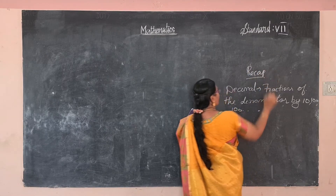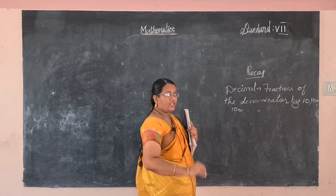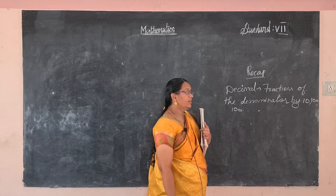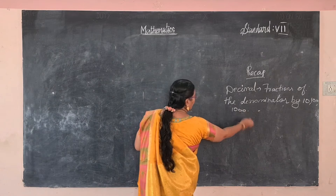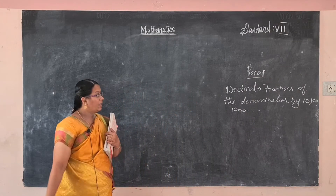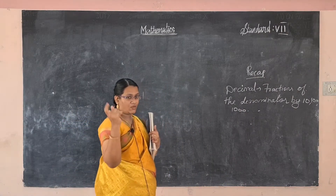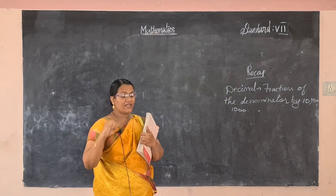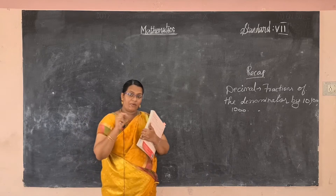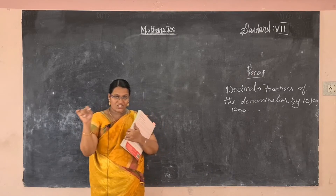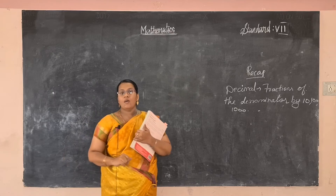Decimals means fractions of the denominator by tens, hundreds, thousands. These are all called decimals. It has two parts: one is the whole number part, and another one is the decimal part. They are separated by a decimal point.